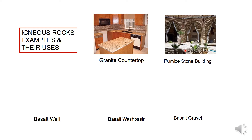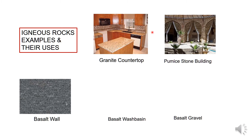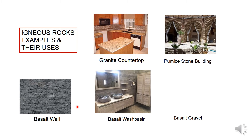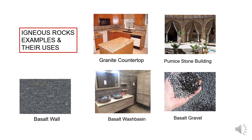Another example of igneous rock is pumice stone. In this image we can see a building made of pumice stone. Pumice is a light coloured, porous igneous rock. Here we can also see an example of a basalt wall, which is also an example of igneous rock. Basalt is a type of igneous rock and is usually dark grey or black in colour. Its strength is the same as granite stone, and basalt is used as an aggregate. We can also see wash basins made of basalt.